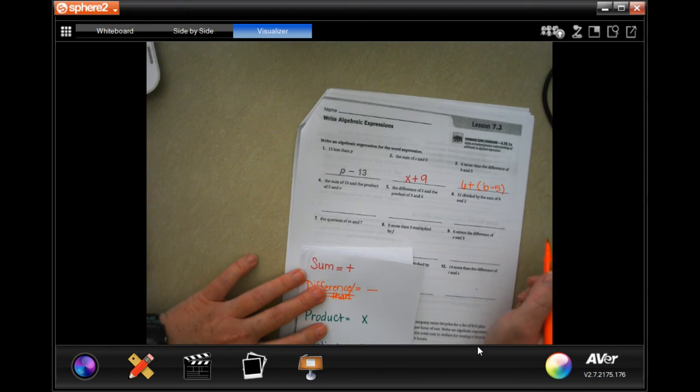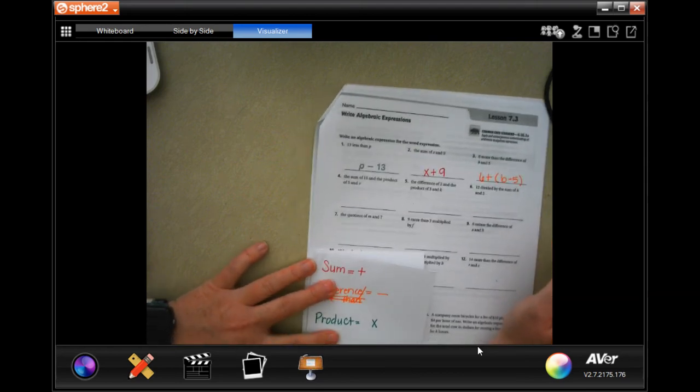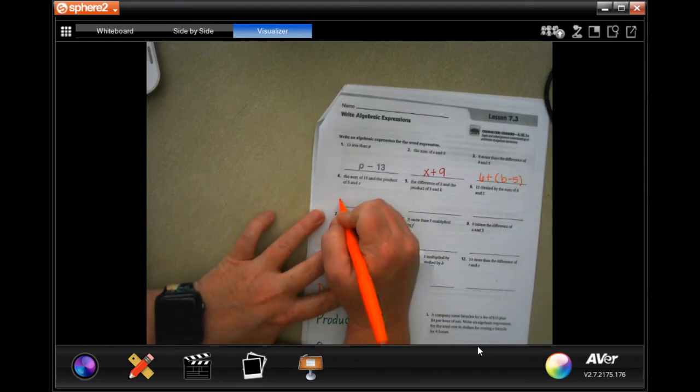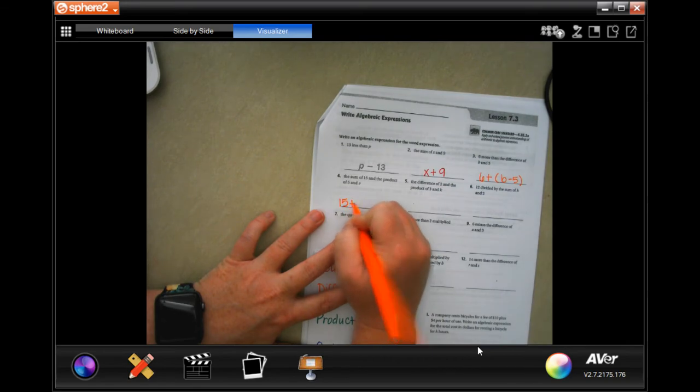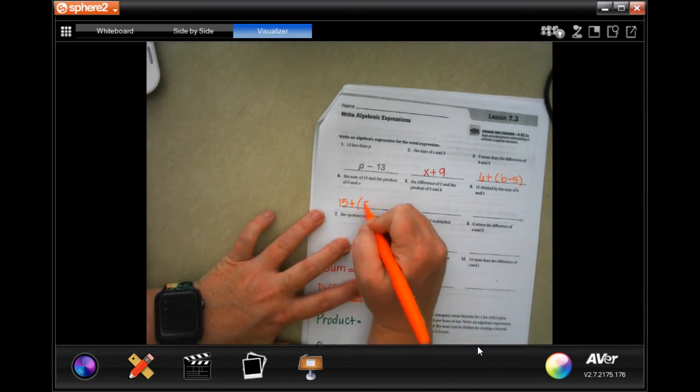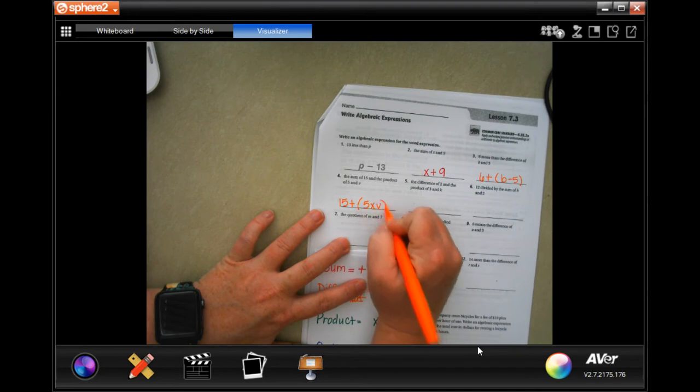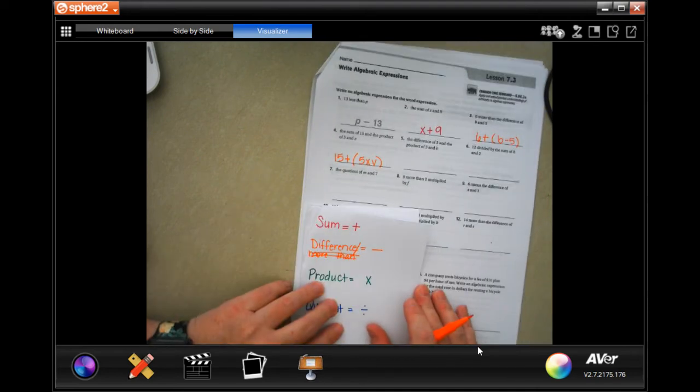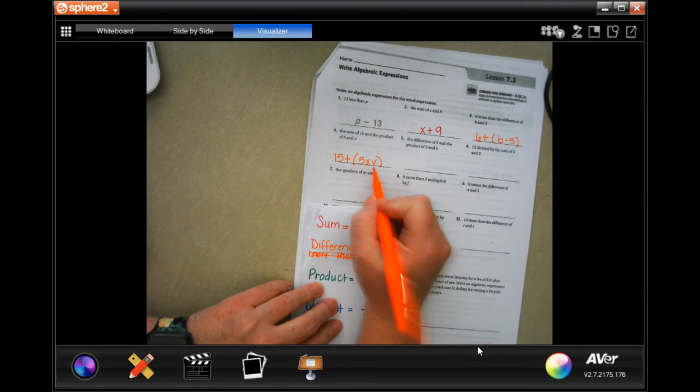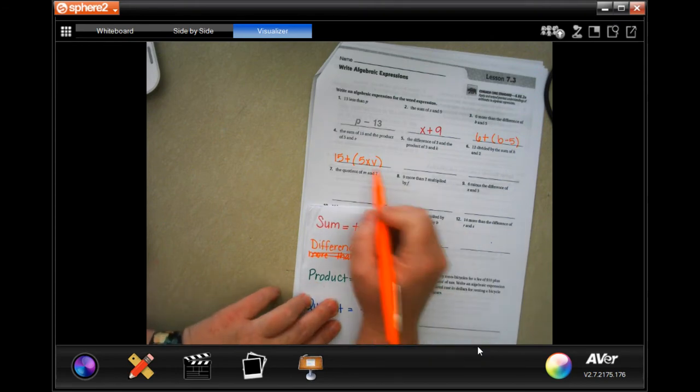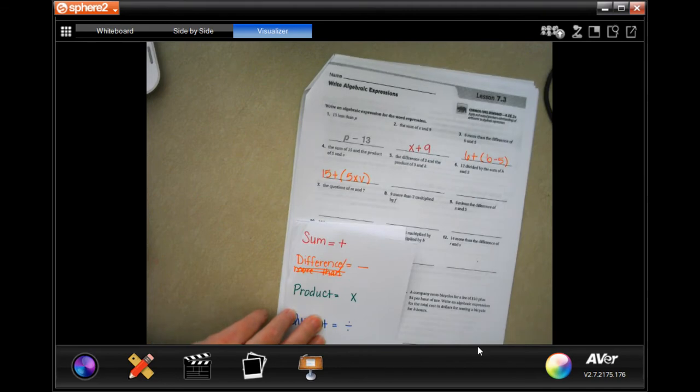The sum of 15 and the product of five and V. So the sum of 15, the product of five and V. Product means multiply. Five and V. And it's saying 15 more than that.